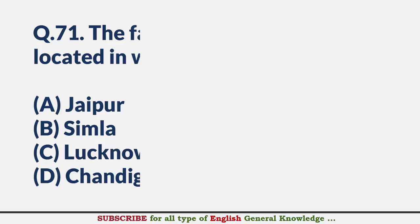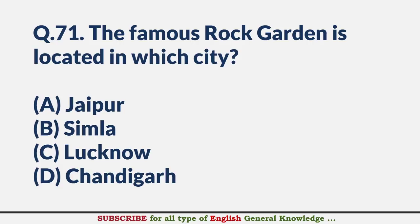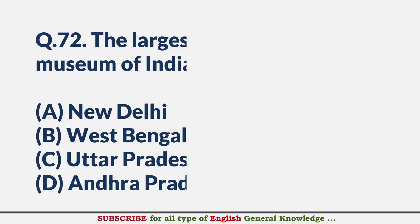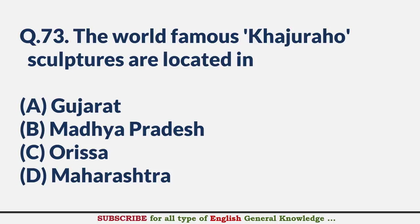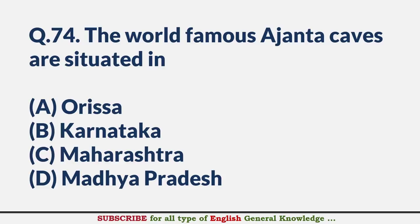The famous Rock Garden is located in which city? — Answer D: Chandigarh. The largest and oldest museum of India is located in — Answer B: West Bengal. The world-famous Khajuraho sculptures are located in — Answer B: Madhya Pradesh. The world-famous Ajanta Caves are situated in — Answer C: Maharashtra.